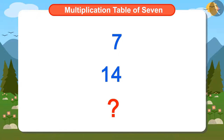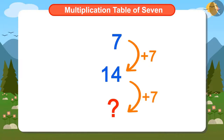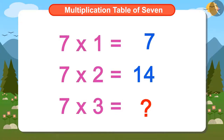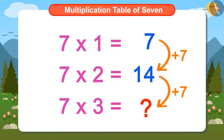Ayushman remembered that he had done such a calculation earlier too. Do you remember where we did this kind of calculation first? We have done this kind of calculation while learning multiplication tables. This is the multiplication table of 7! Its first number is 7. We added 7 to it and got the next number. By further adding 7 to it, we will find the subsequent number.